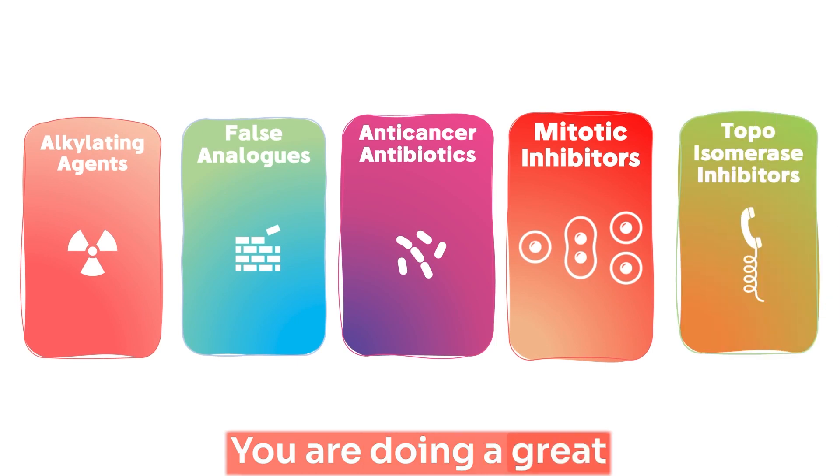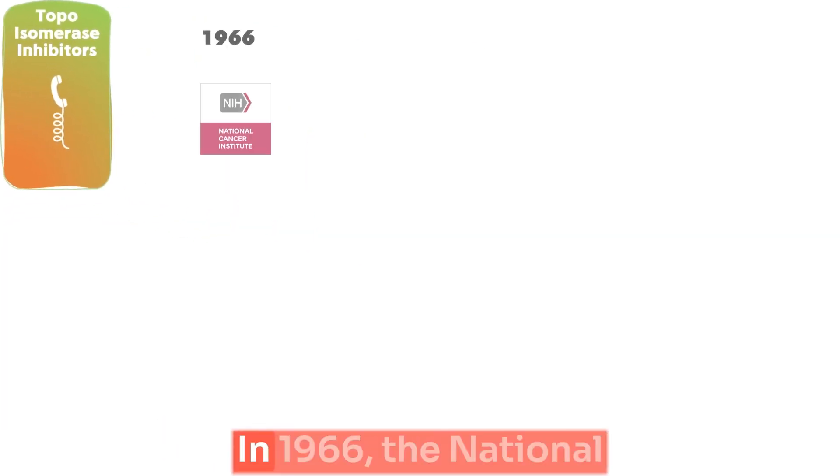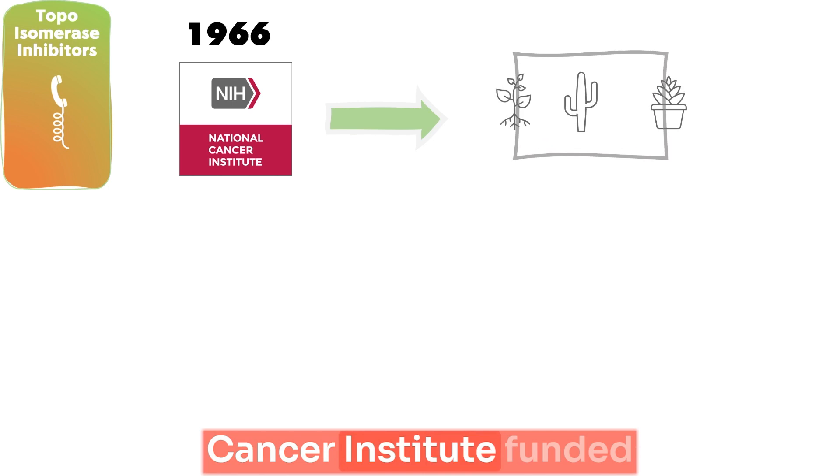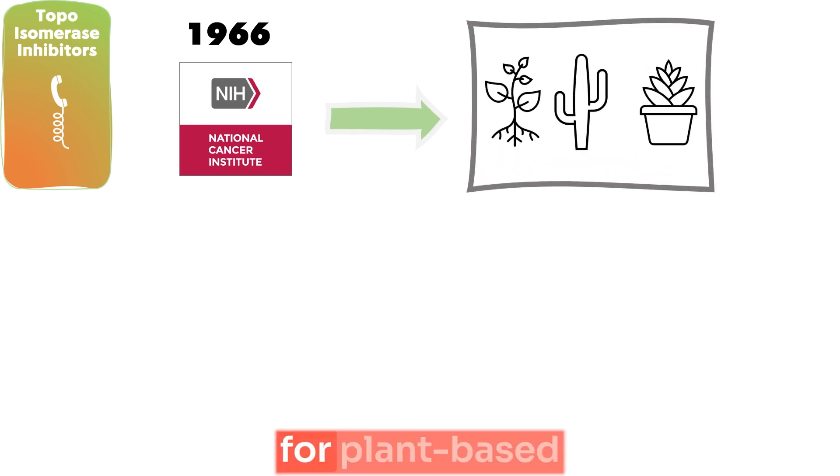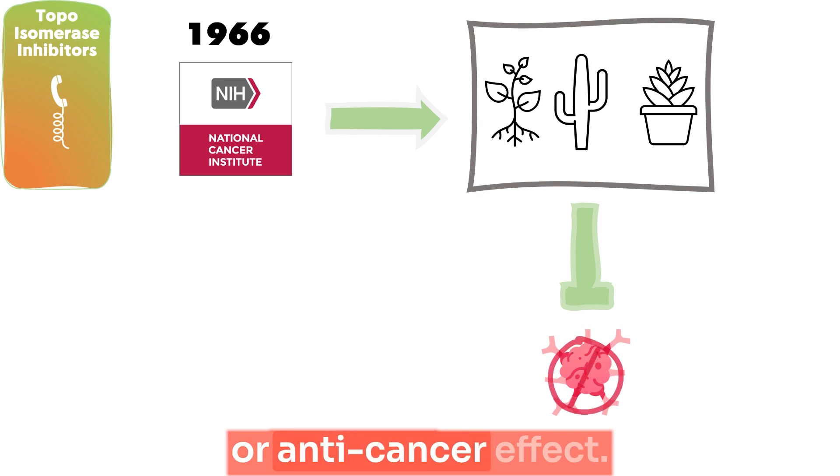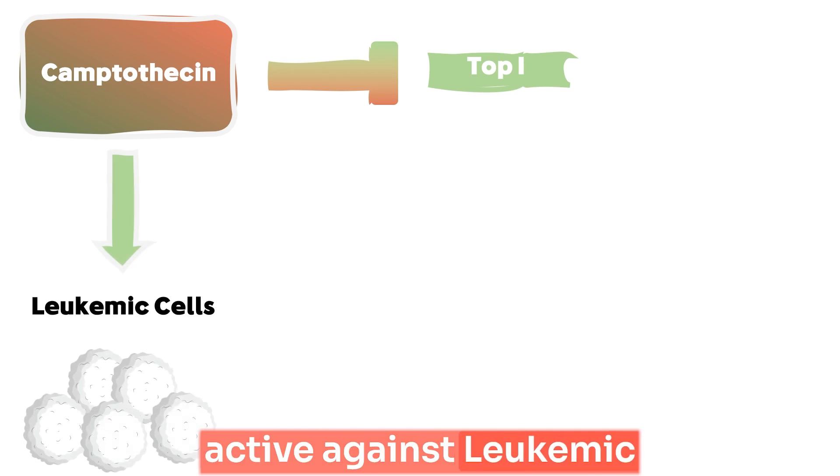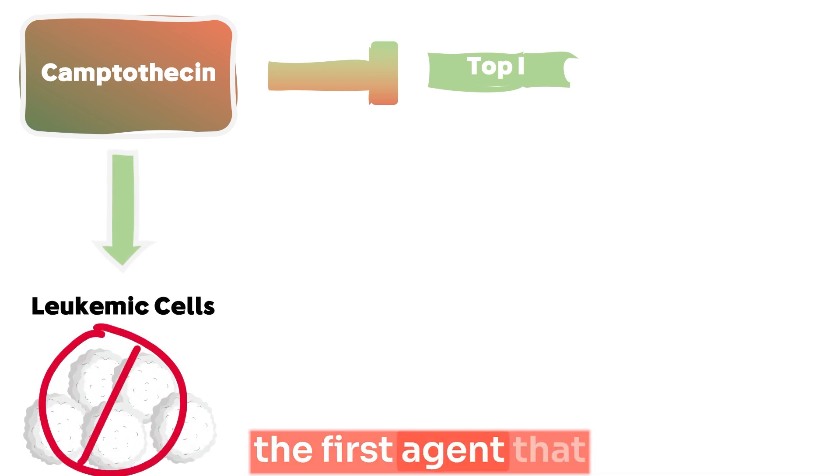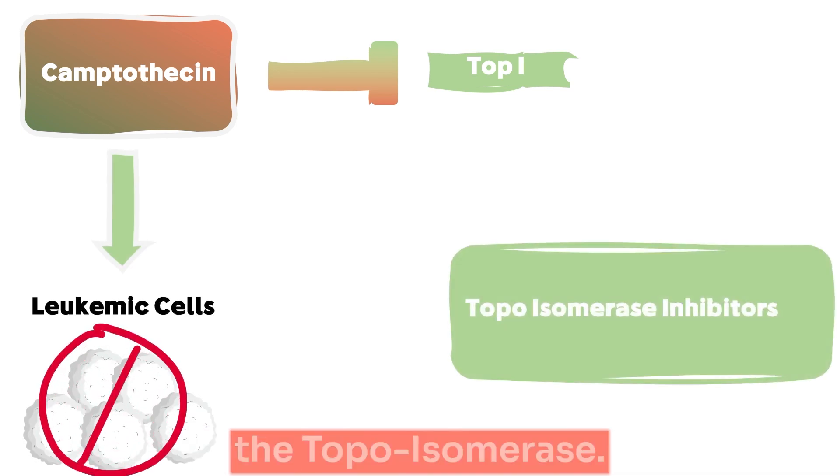You are doing a great job, but still we have one more to go. In 1966, the National Cancer Institute founded a project searching for a plant-based compound that can have an anti-tumor or anti-cancer effect. They discovered the drug called camptothecin. This agent was very active against leukemic cell lines and was the first agent that targets specifically the topoisomerase.